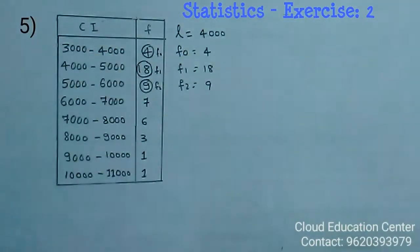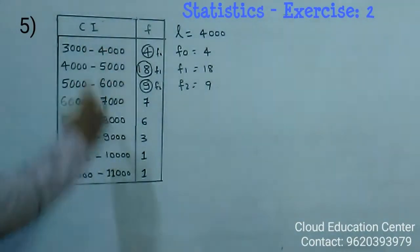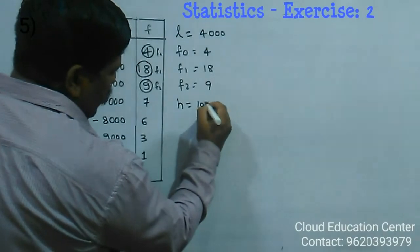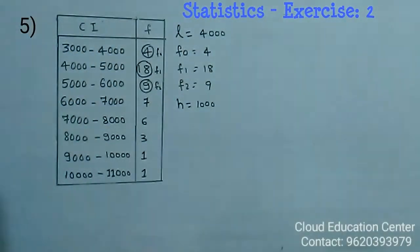And the width or class size is nothing but 4000 minus 3000 is 1000. That is, h is equal to 1000. Okay, we got all the values.